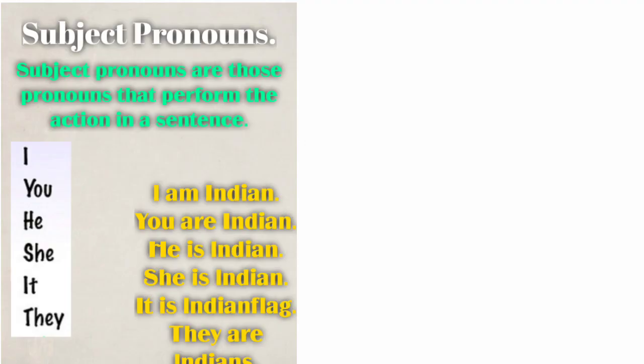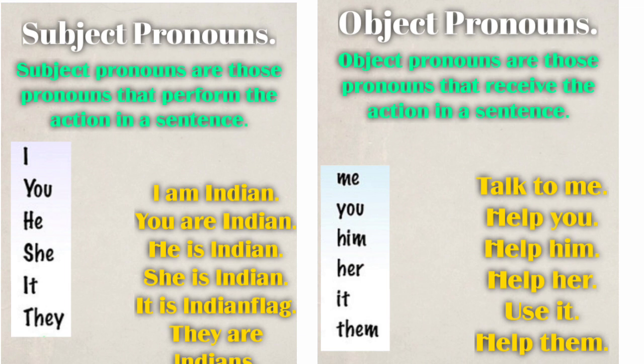We divided them into subject pronouns and object pronouns. Subject pronouns are those pronouns that perform the action in a sentence. Object pronouns are those pronouns that receive the action in a sentence — me, you, him, her, it, them. We discussed all of these with examples in the last class.